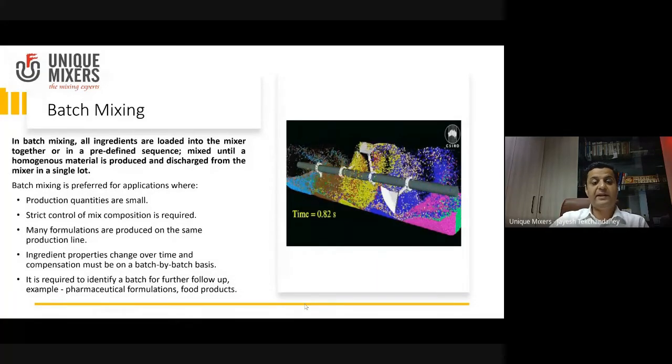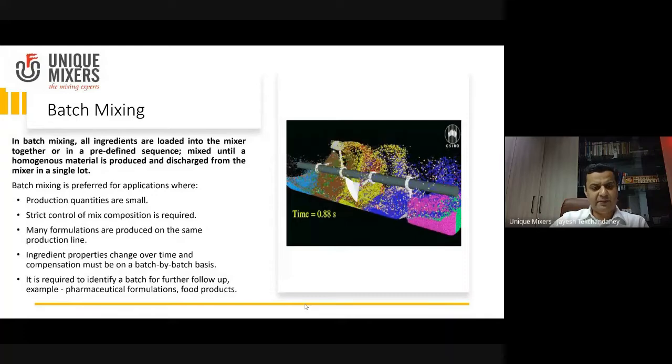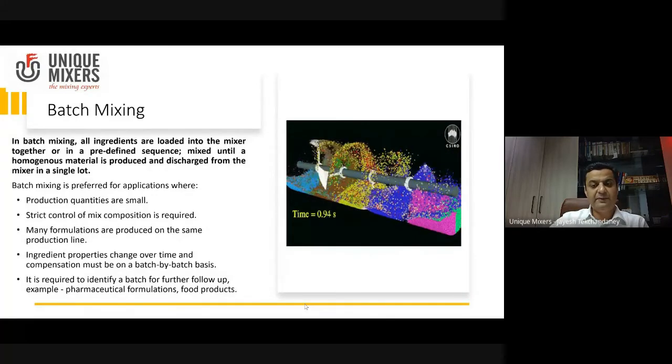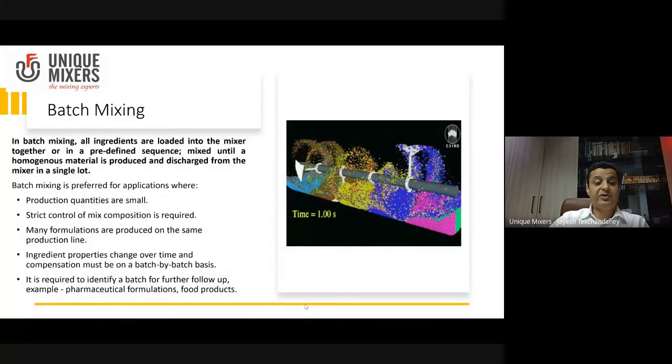Let's look at where these batch mixers are used: where production quantities are small, where strict control of mix composition is required, where you want to produce many formulations on the same production line, and in cases where ingredient properties change over time and compensation must be made from batch to batch.